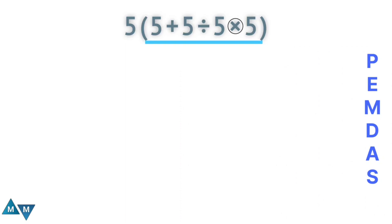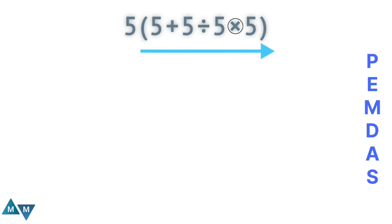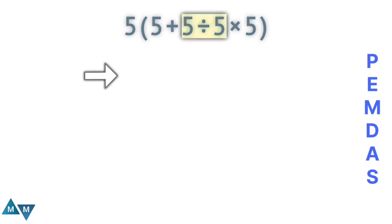The first thing we're going to do is parentheses — simplify everything inside first. Inside the parentheses we have a plus sign, division sign, and a multiplication sign. Since multiplication and division are present, we work left to right. I see division first, so five divided by five will be our first move, which equals one. We are still working inside the parentheses.